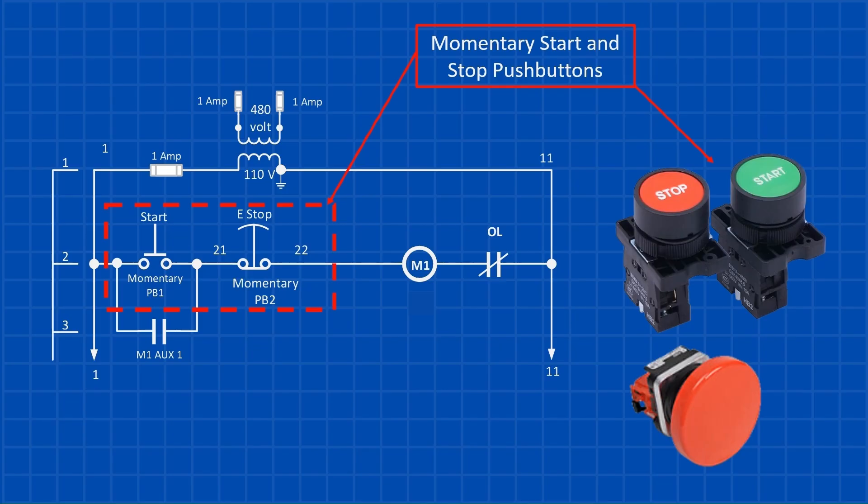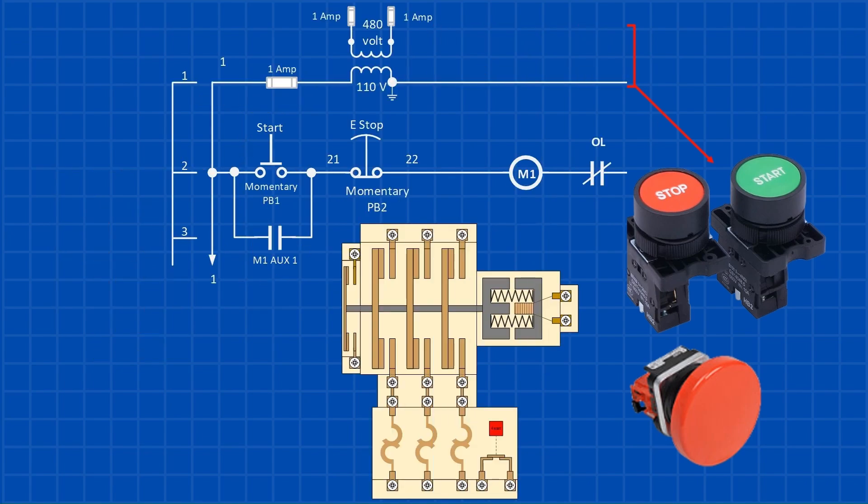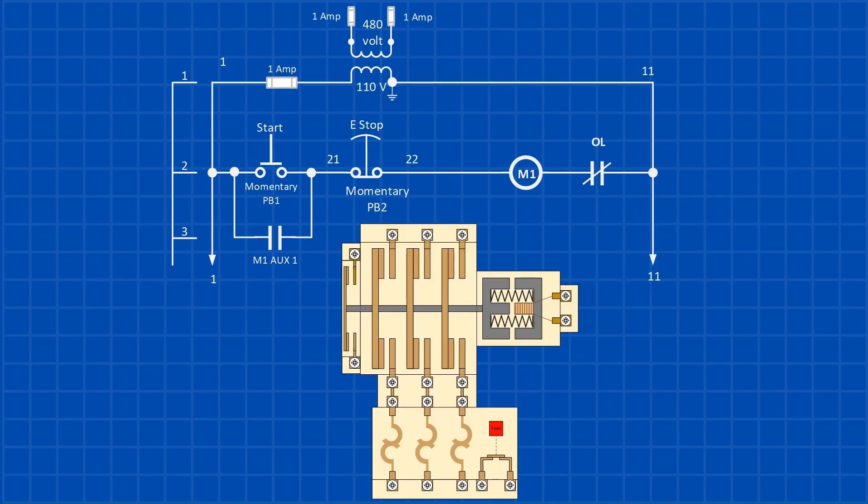The stop button is normally closed, meaning it allows current to flow until pressed. The start button, on the other hand, is normally open and only completes the circuit when you press it. The next three components in the circuit are all part of the motor starter. First is the starter coil, labeled M1. Then there's the auxiliary contact of the starter, and lastly the normally closed overload contact. So how does this circuit work? Let's go through that next.